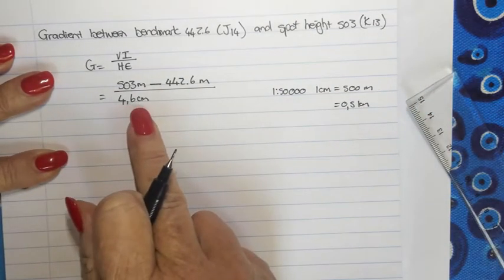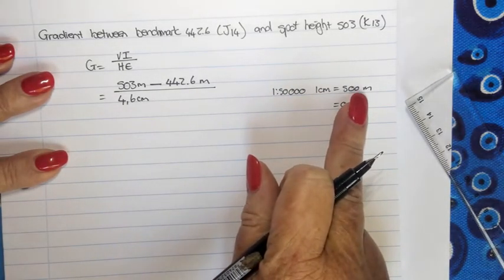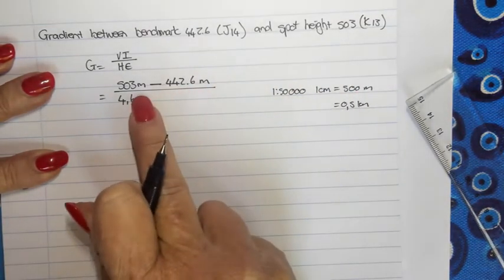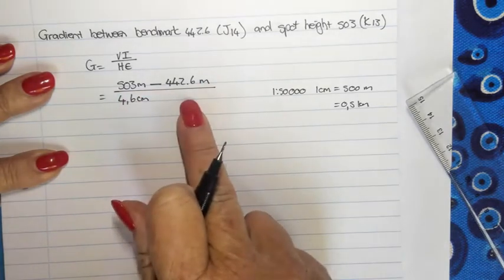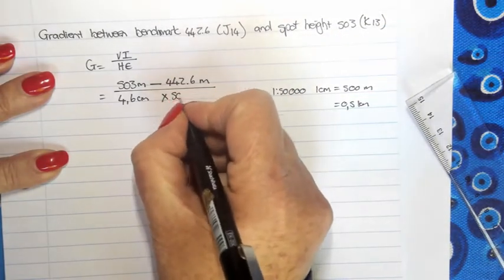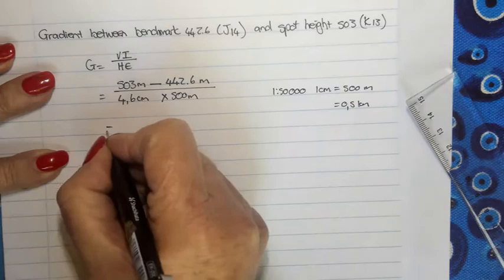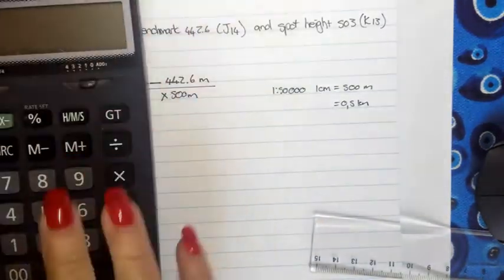So, I need to multiply this 4.6 centimeters with one of these two to get it into a map distance. Now, look. My height distance is in meters. So, my map distance also needs to be in meters. So, I'm going to multiply here by 500. It is so that they are the same unit of measurement.